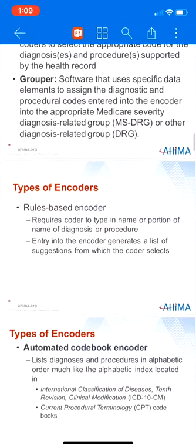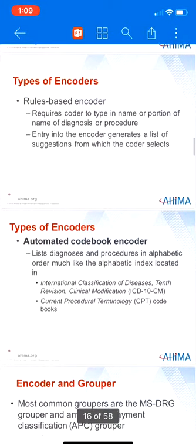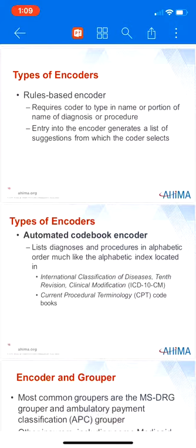There are two types of encoders. The first is the rules-based encoder. It requires the user to type in the name or portion of the name of the diagnosis or procedure. This entry generates a list of suggestions from which the coder selects. For example, if the coder types in P-N-E-U, the encoder may suggest pneumonia or pneumonitis. From there, the coder scrolls down until the proper code is selected.